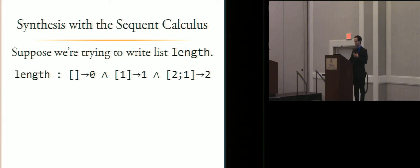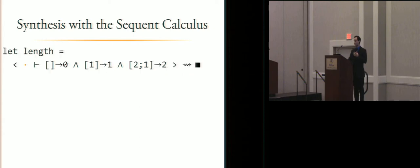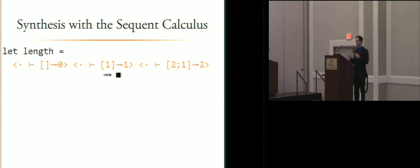So this is the refinement we had before for list length. This is our synthesis sequent. It says that given an initial context, our first step is to apply the right arrow rule, which splits into branches. Each of which has a separate goal type.